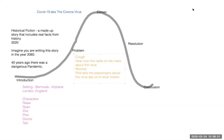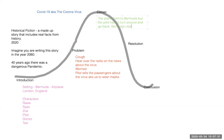For the climax, I've landed in London. Actually, here's an idea: the plane was flying to Bermuda, but the pilot had to turn around and go back because Bermuda closed the airport — so the plane could not land. That's my exciting part of the story: the plane could not land, and so we had to turn around and go back to England.